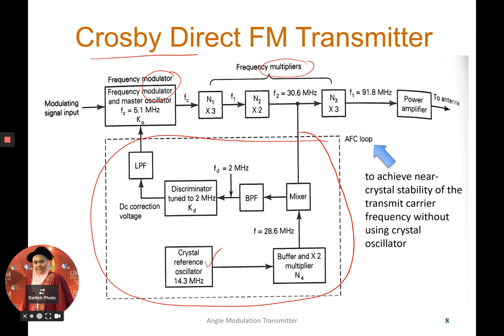This feedback section is called the AFC loop — Automatic Frequency Control loop — used to achieve near-crystal stability of the transmitted carrier frequency without directly using a crystal oscillator. As we learned in Chapter 3, the crystal oscillator provides the most stable frequency. The multipliers used are N1, N2, and N3; N4 is inside the AFC loop and is not considered a frequency multiplier for the system. The signal is then power-amplified and transmitted through an antenna.